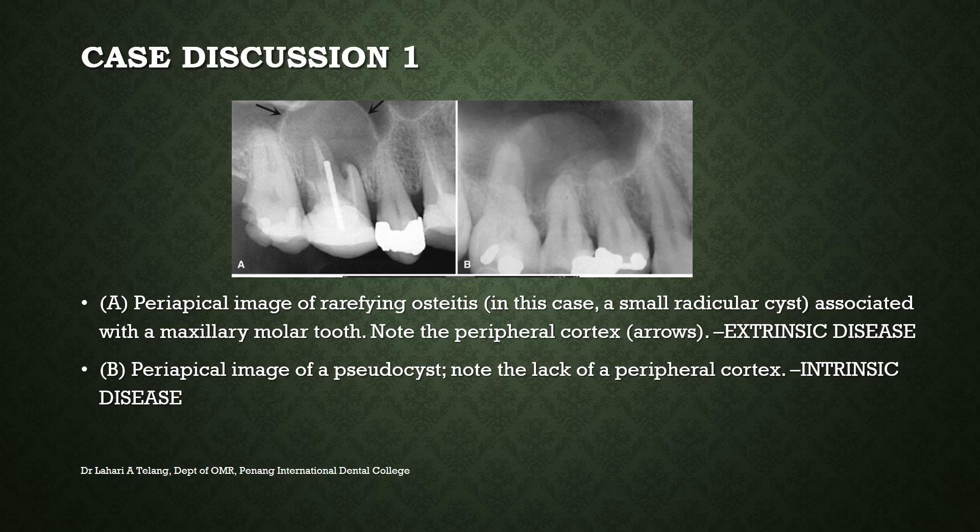Looking at two intraoral periapical radiographs: image A shows rarefying osteitis with radiolucency at the apex of the mesiobuccal root, possibly a small radicular cyst, along with a large radio-opacity with a peripheral cortex impinging into the sinus. Image B shows a pseudocyst, with no peripheral cortex, indicating disease originating intrinsically within the sinus floor itself, while the periapical regions of the premolars and molars appear fine.